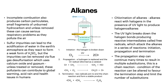Alkanes react with halogens in the presence of UV light to produce halogenoalkanes. The UV light breaks down the halogen bonds, producing reactive intermediates called free radicals which attack the alkanes in a series of reactions: initiation, propagation and termination. In initiation, the halogen is broken down. In propagation, a hydrogen is replaced and the Cl radical is reformed as a catalyst. In termination, two radicals join to end the chain reaction and form a stable product. The propagation step can continue many times, resulting in multiple substitutions — this is a chain reaction.